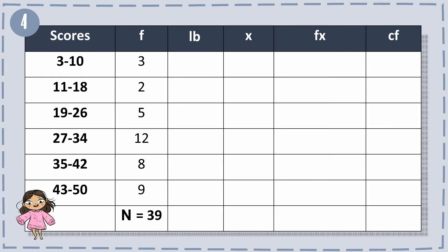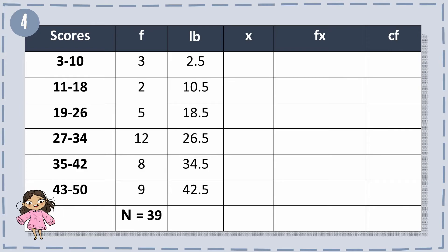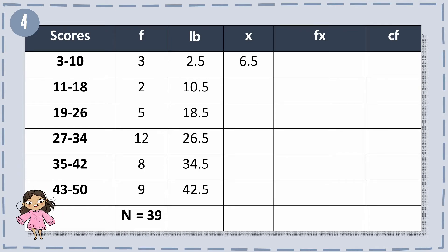For LB: 3 minus 0.5 equals 2.5, 11 minus 0.5 equals 10.5, 19 minus 0.5 equals 18.5, and so forth. For x: 3 plus 10 equals 13, divided by 2 equals 6.5. Next, 11 plus 18 equals 29, divided by 2 equals 14.5, and so on.